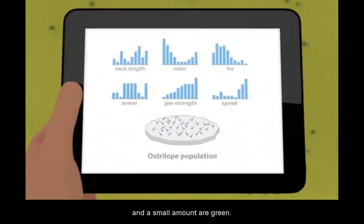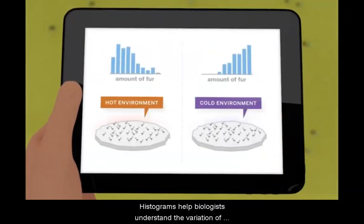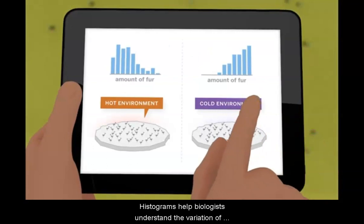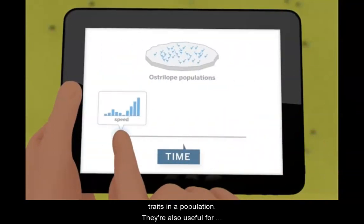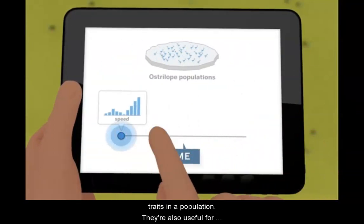Histograms help biologists understand the variation of traits in a population. They are also useful for comparing two or more populations or for investigating how populations change over time.